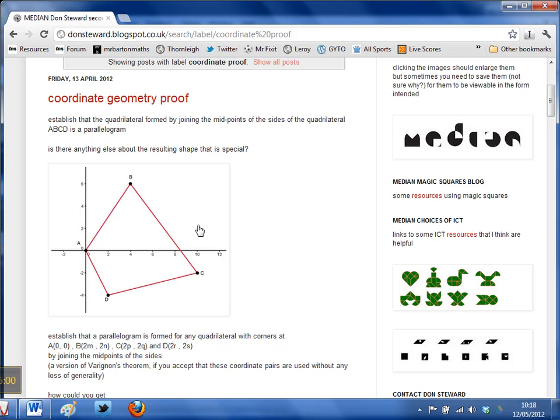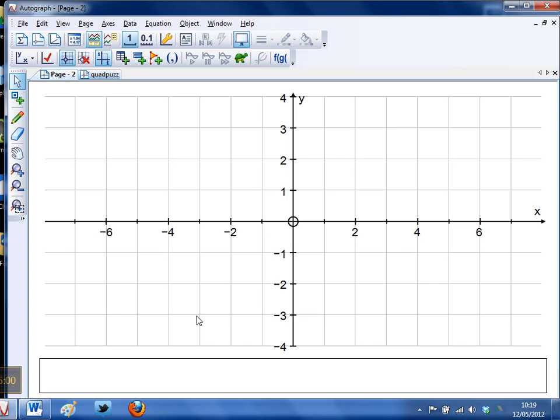Once again, I like to encourage students to investigate this using paper and pencil, and then when they've done all that thinking about it we can turn to a dynamic geometry package like Autograph to investigate it a bit further. So give them 10-15 minutes to have a good old think about it, and then let's turn to Autograph and construct this.